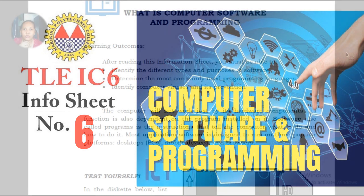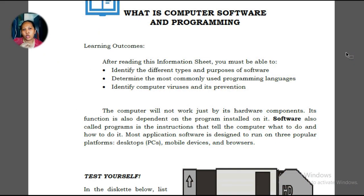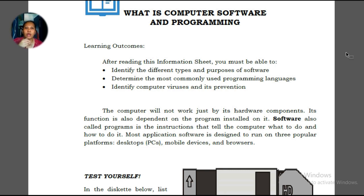Hello class, this is information sheet number 6 of computer software and programming. After this, you must be able to identify the different types and purposes of software, determine the most commonly used programming languages, and identify computer viruses and its prevention.